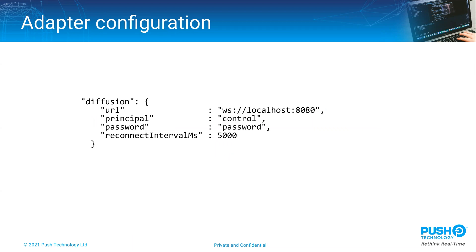The configuration file for the adapter is in JSON format. We provide a JSON schema file if you need to validate that your configuration file is correct before attempting to use it, and the schema file also contains short descriptions of all the adapter's configuration parameters. It doesn't contain details about any Debezium-specific parameters and those can be found in the Debezium documentation, as we'll see on the next slide.